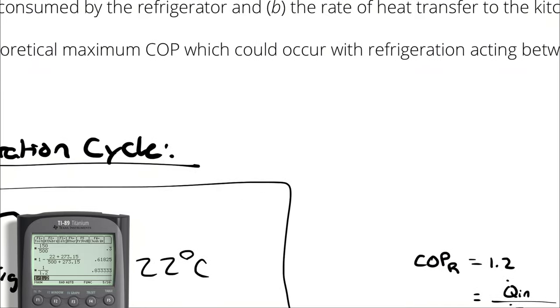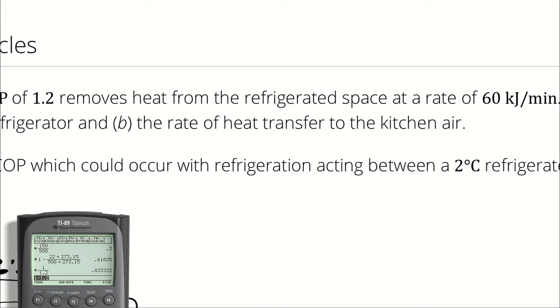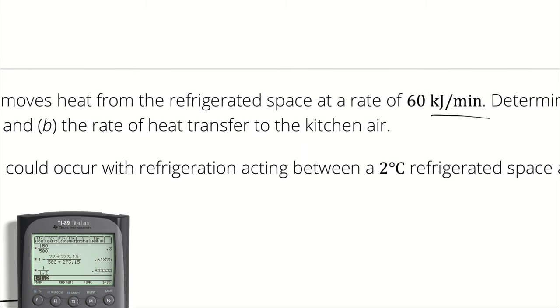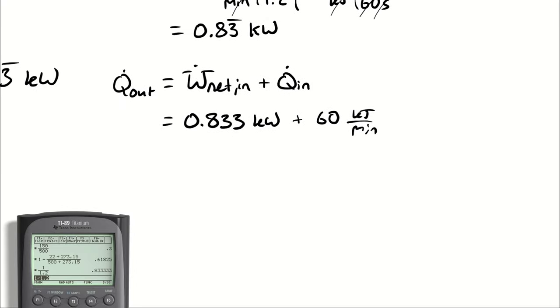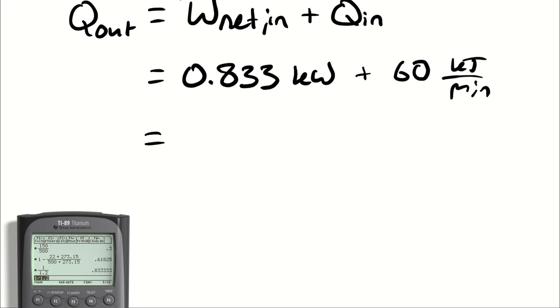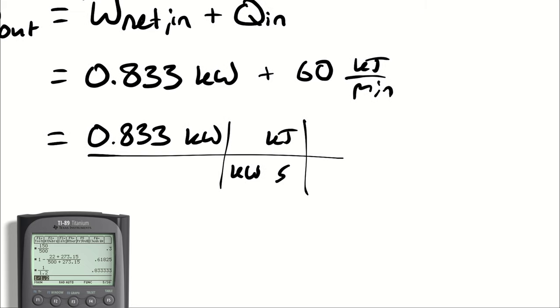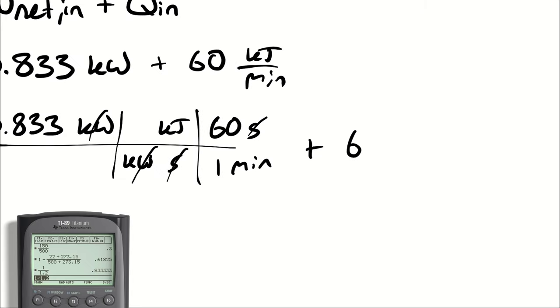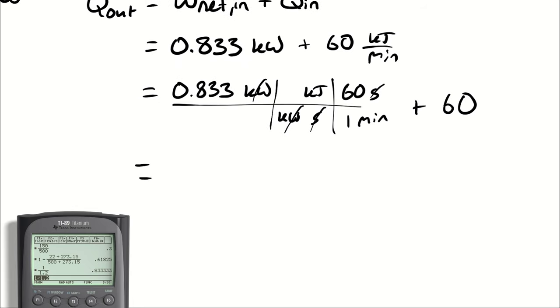I didn't ask for a unit again, so just to be antagonistic, let's say that I wanted to know the rate of heat transfer to the kitchen air at a rate of kilojoules per minute. So now I have to take our shiny new kilowatts and convert that back into kilojoules per minute. A kilowatt is a kilojoules per second, and there are 60 seconds in one minute. And then I add 60 to that number, and I get 110.